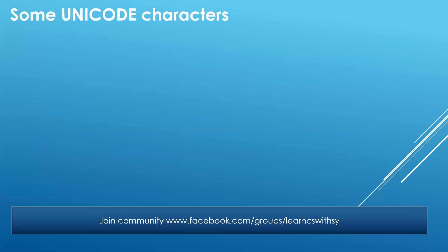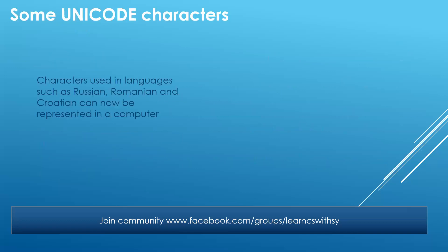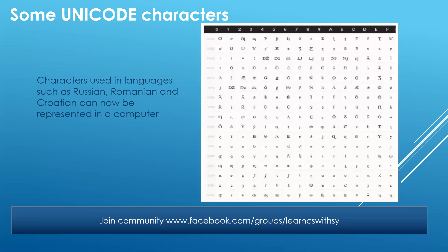Just some Unicode characters for you to comprehend: characters used in languages like Russian, Romanian, and Croatian are represented by Unicode. You don't have to rote-learn these. What you need to know is the difference between ASCII and Unicode — one byte versus four bytes — and that will give you a very clear idea of ASCII values and Unicode values.